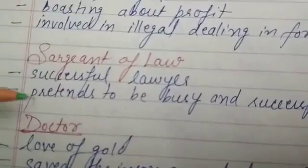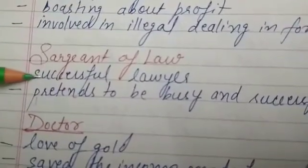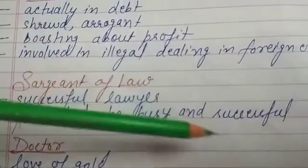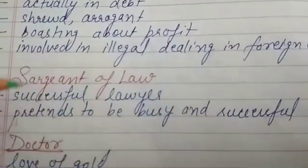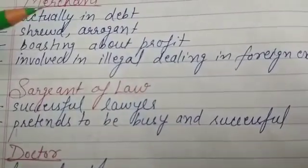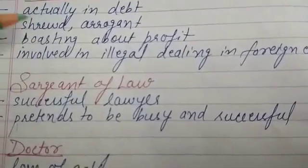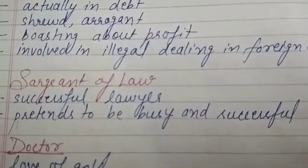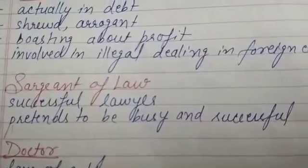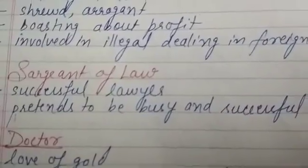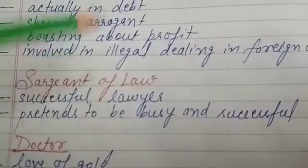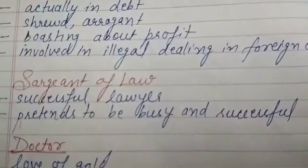The Sergeant of Law was a successful liar who pretended to be busy and successful. A question can come asking: name the character in the Prologue to Canterbury Tales who pretended to be very busy — the answer is the Sergeant of Law.